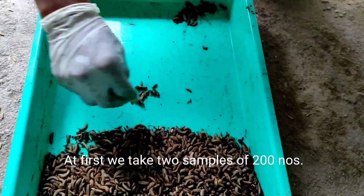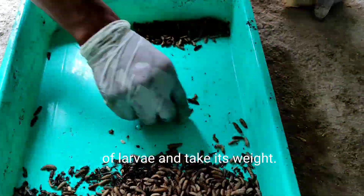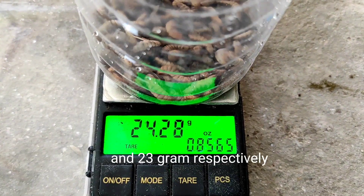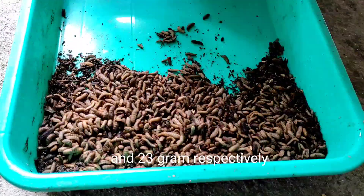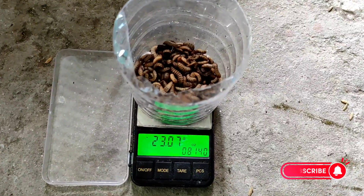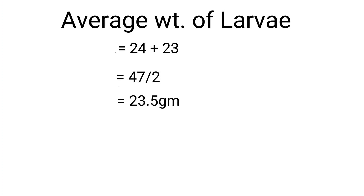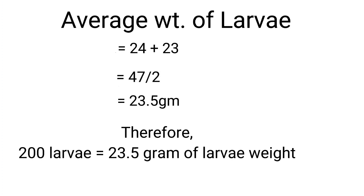First, we take two samples of 200 larvae each and record their weights. As you can see, the weights are 24 grams and 23 grams respectively. To find the average weight, we add 24 and 23 and divide the sum by 2, since two samples were taken. The average weight is 23.5 grams, meaning 200 larvae weigh 23.5 grams on average.